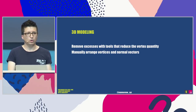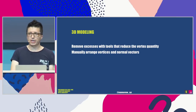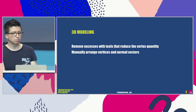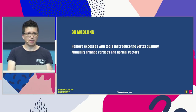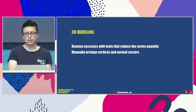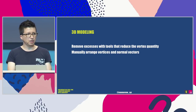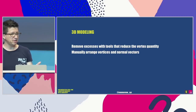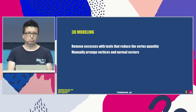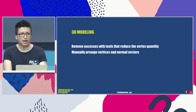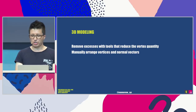Once you have all that, you're ready to remove the excesses by running tools in your 3D modelling software to extract the vertex data. Then your 3D team needs to manually arrange those vertices and place the normal vector perpendicular to the quad or triangle, in order to have accurate representations of lights and reflections on the surface of your object.